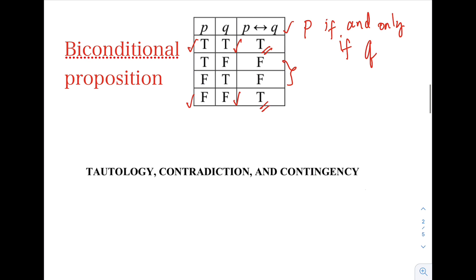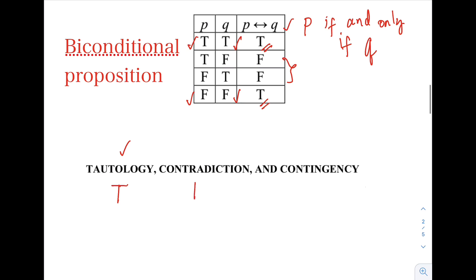Next, we have the words tautology, contradiction, and contingency. A compound proposition that is always true is called a tautology. The truth table for a tautology has T in every row. If the last column is all true, then our truth table is a tautology. A proposition that is always false is called a contradiction — the truth table for a contradiction has F in every row in the last column. If the last column contains both true and false, the compound proposition is a contingency.